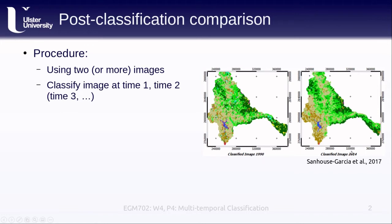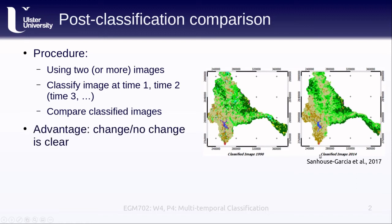We classify our image from 1990, classify our image from 2014, and then compare the two classified images. One advantage this technique has is that the definition of change and no-change is quite clear. For example, if a pixel was classified as forest in 1990 and classified as something else in 2014, we know exactly what that change is. Other techniques like change vector analysis require that interpretation as you go, whereas here the classification has already been done.